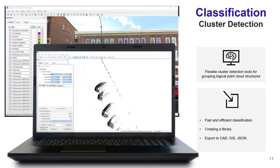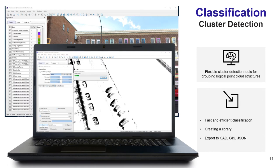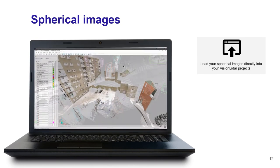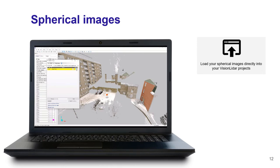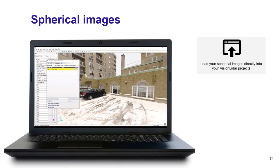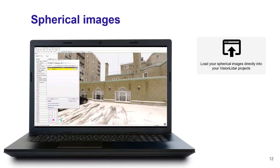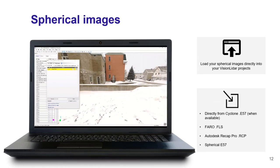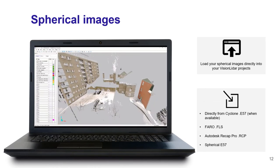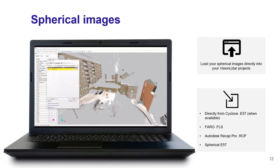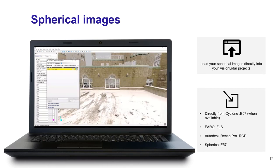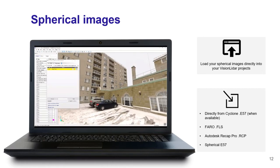In Vision LiDAR, you also have the possibility to import your 360-degree images within your project, which can help with classification or future extraction by providing a better visual of your point cloud. Sometimes elements can be obstructed by other elements and won't be displayed in the point cloud; by using a photo on top of it, you will have a visual on those specific elements, giving you better results for your project.